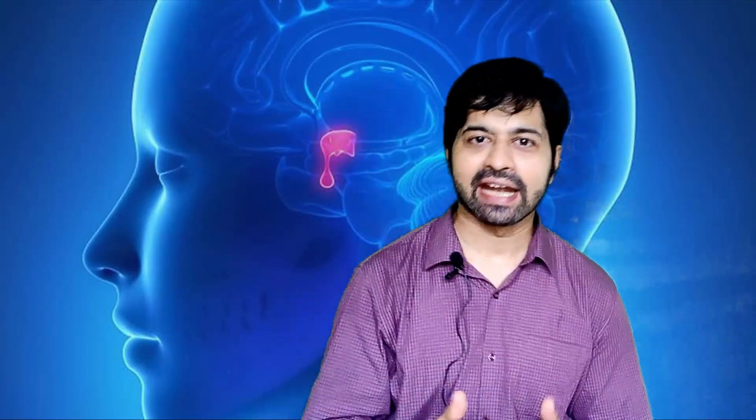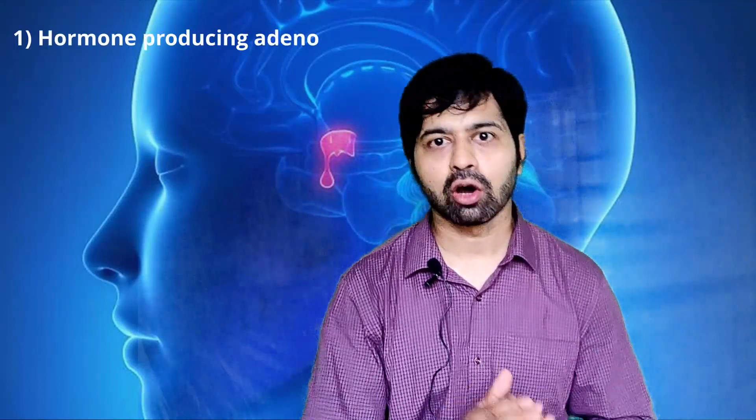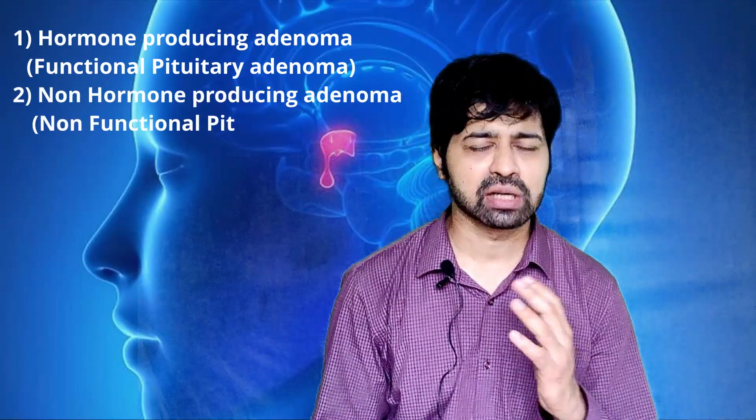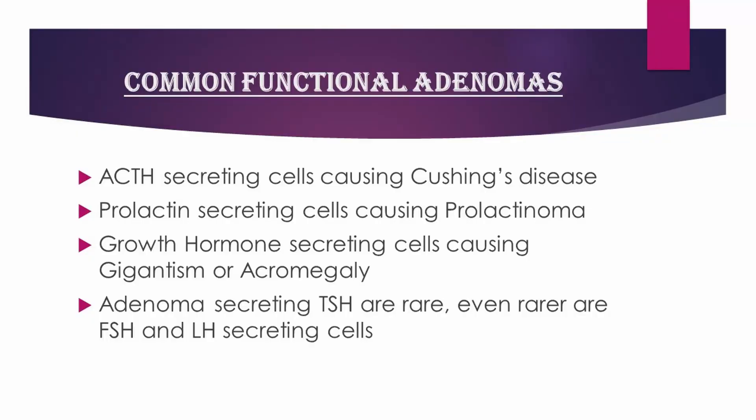With this background, let's come to the topic of the day, that is pituitary adenoma. An adenoma is a benign tumor arising from any of the glands. As the normal function of the gland is to produce hormones, the tumor arising from the gland, or the adenoma, may or may not produce hormones. So accordingly, pituitary adenoma can be divided into hormone-producing adenoma or the functional pituitary adenoma, depending on the function of the cells of the tumor origin.